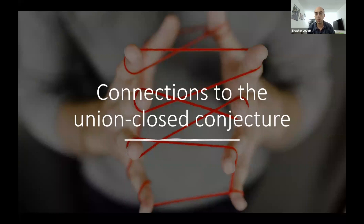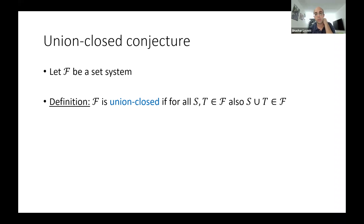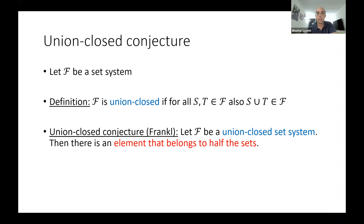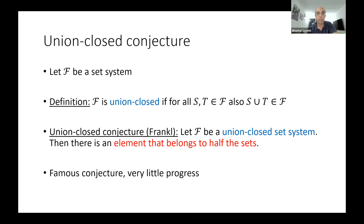Now let me tell you about the connection to the union-closed conjecture, which is very simple to state and apparently very hard to solve. A set system F is union-closed if for any two sets in F, their union is also in F. The conjecture, attributed to Frankl from the 1980s, states: for any union-closed set system, there is an abundant element — an element that belongs to at least half the sets. For example, if you take all subsets of {1, ..., n}, every element belongs to exactly half the sets. The conjecture says at least one element should belong to at least half the sets in any union-closed family.